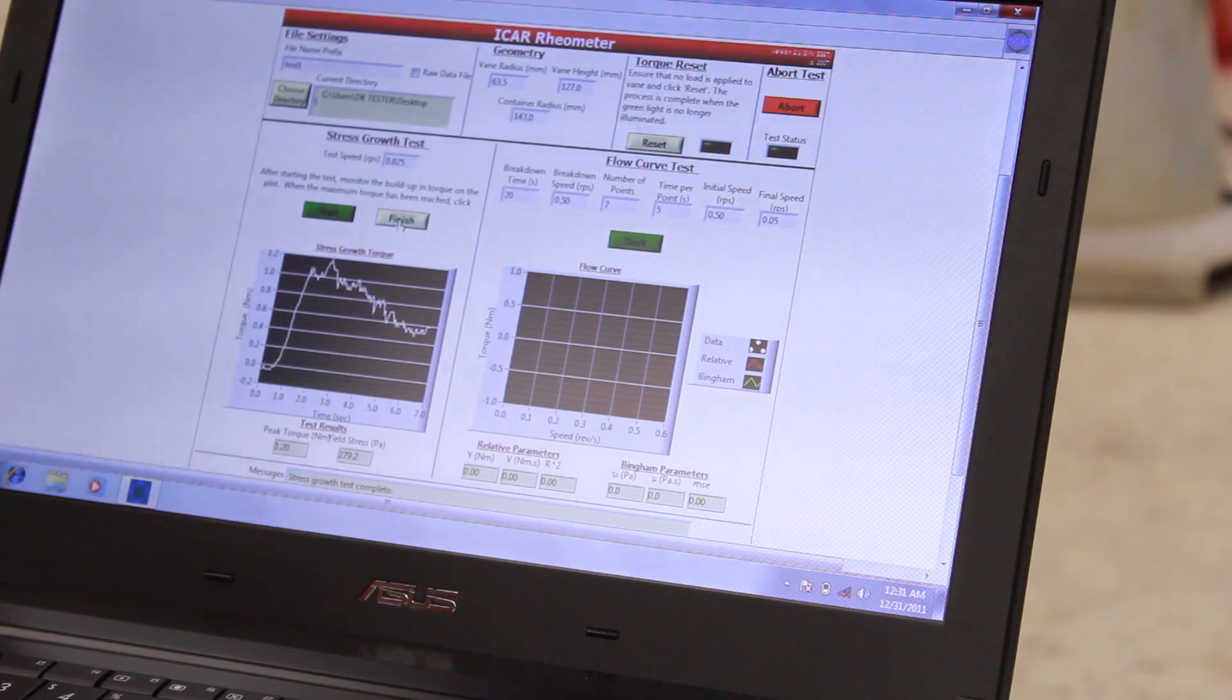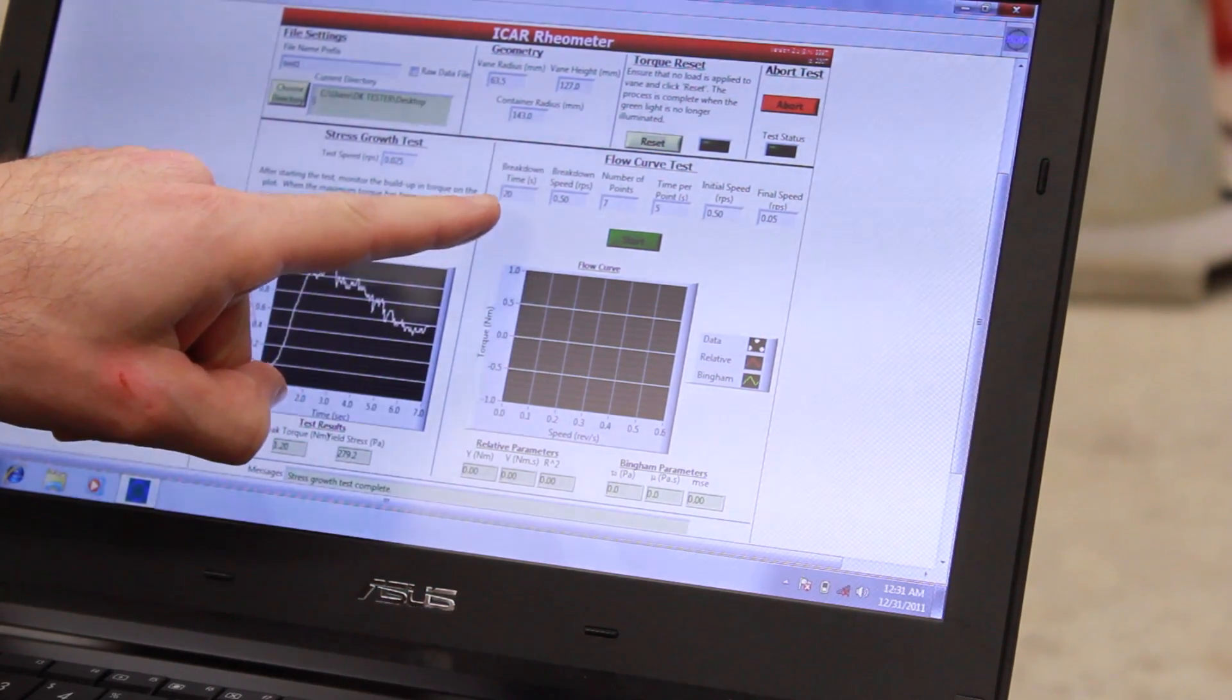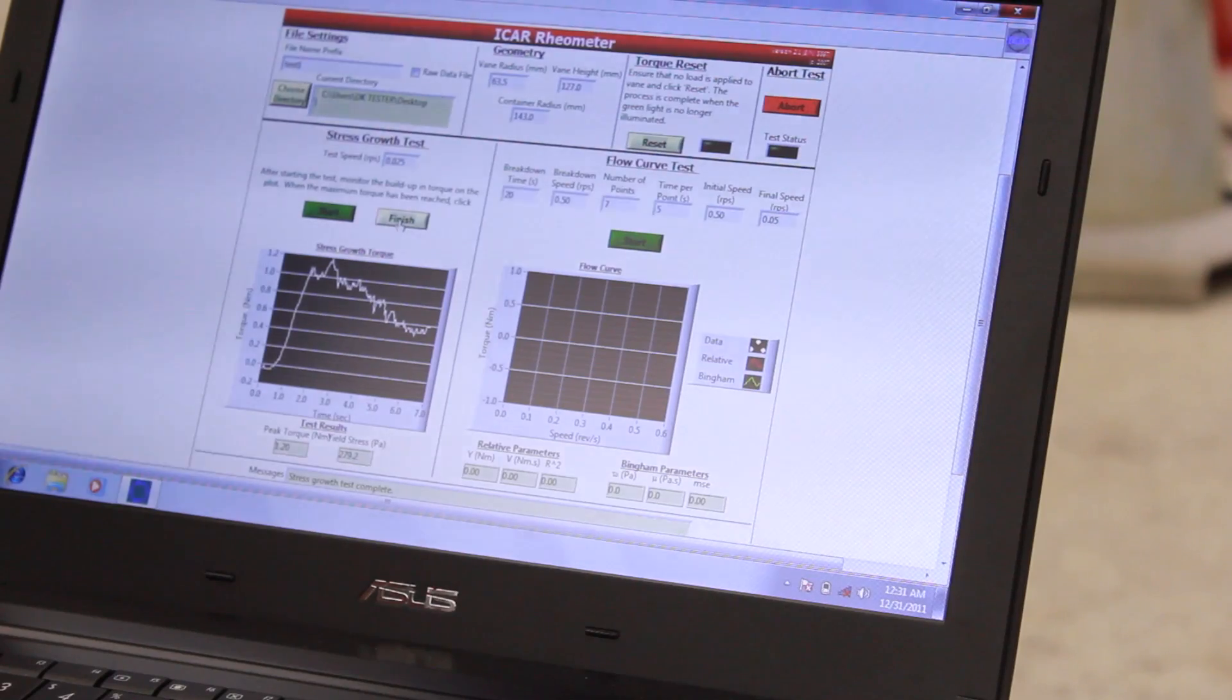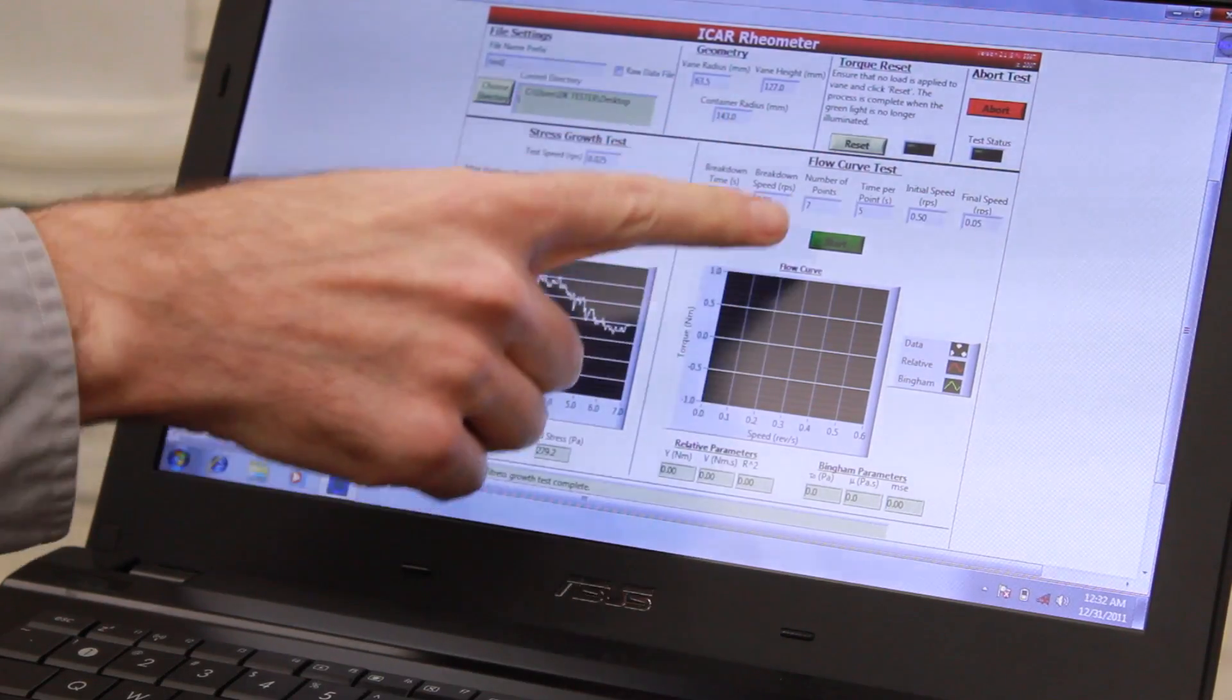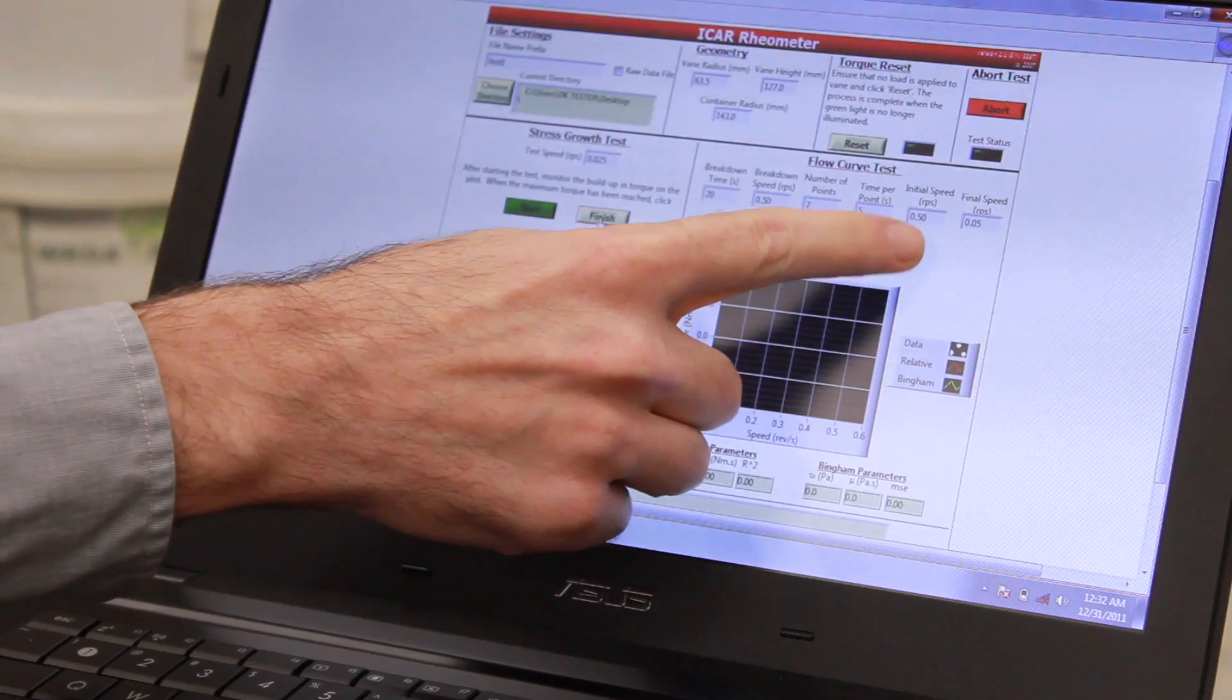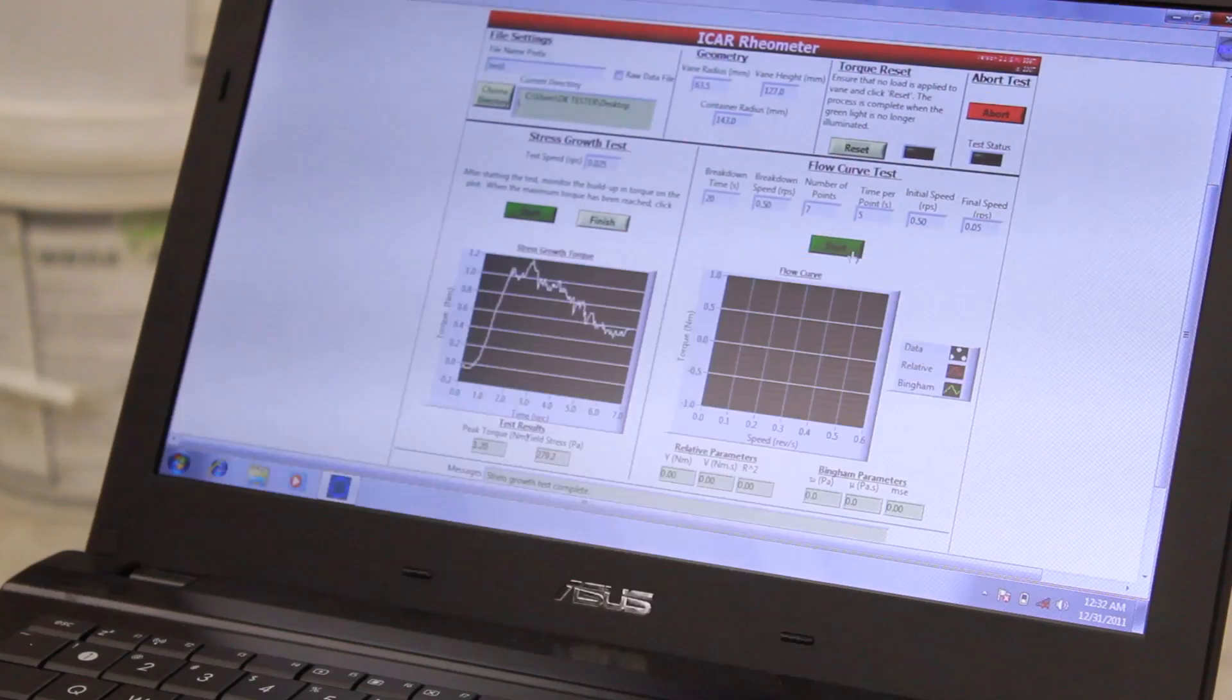The test is going to consist of two phases. First is the breakdown phase, where for the breakdown time we operate at the breakdown speed. The purpose of the breakdown is to eliminate the effects of thixotropy. We then run the test at different speeds. In this case, we'll do seven points at five seconds per point, starting at 0.5 and then going to 0.05 revolutions per second. Once we're ready, we just press start.